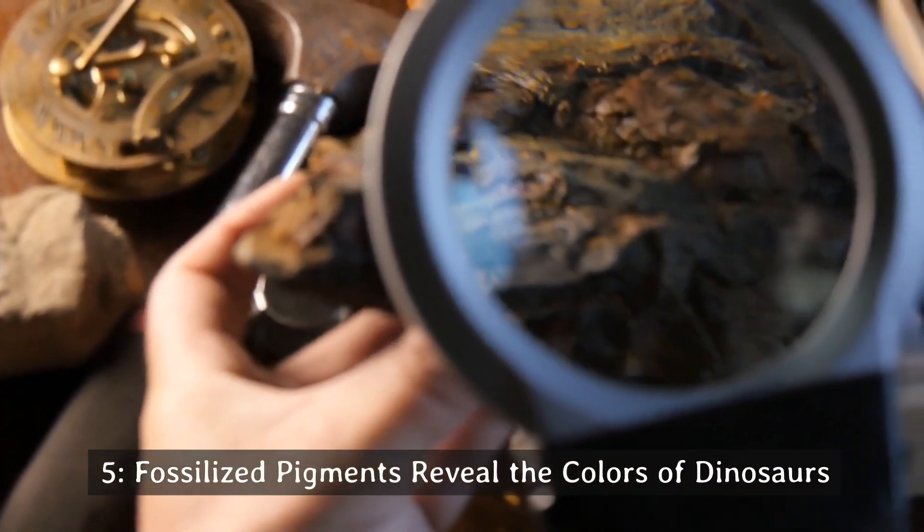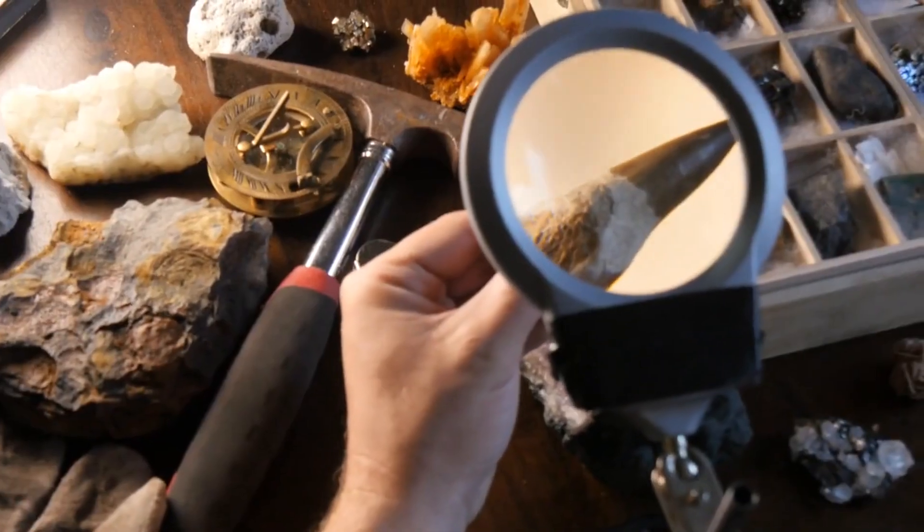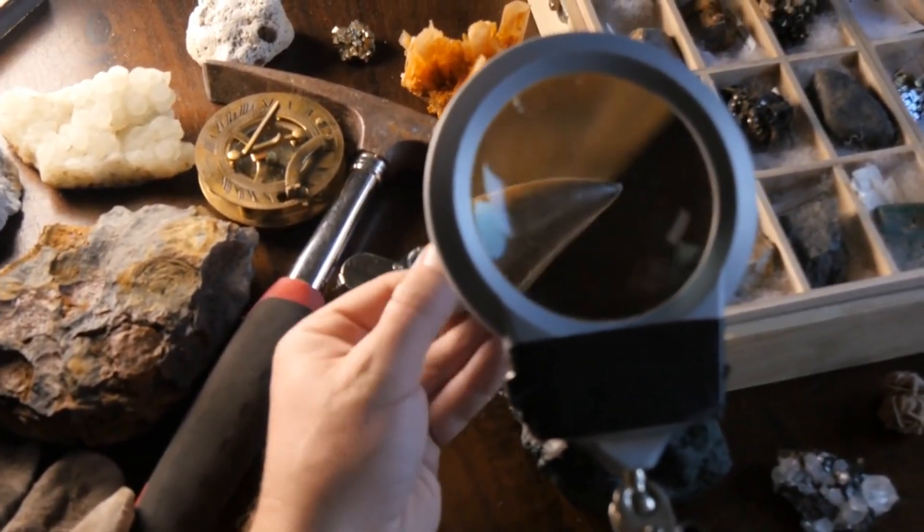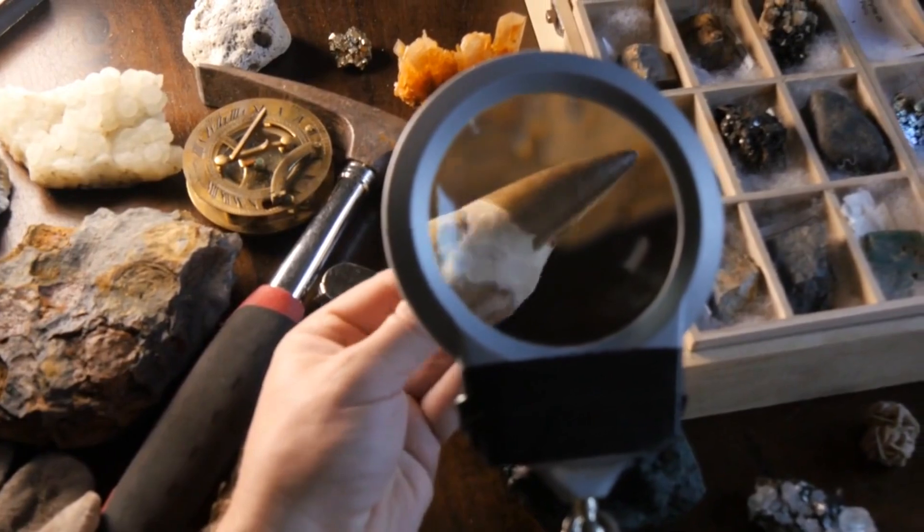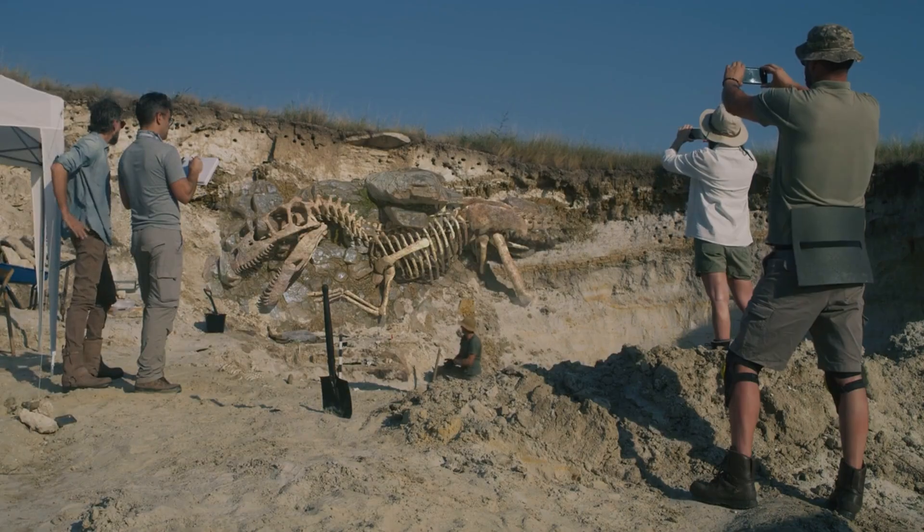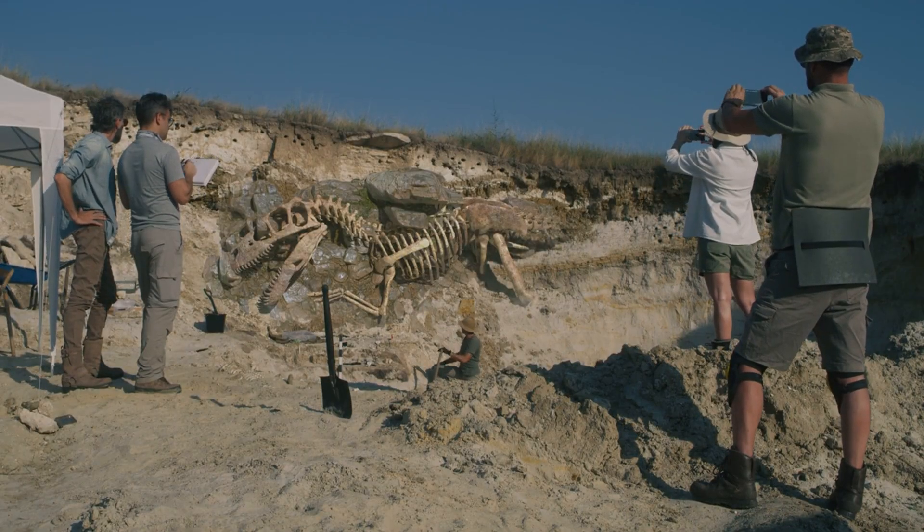Number 5: Fossilized pigments reveal the colors of dinosaurs. The decade began with a revolution in paleontology as scientists got their first look at the true colors of dinosaurs. First, in January 2010, an analysis of melanosomes, organelles that contain pigments, in the fossilized feathers of Sinosauropteryx.